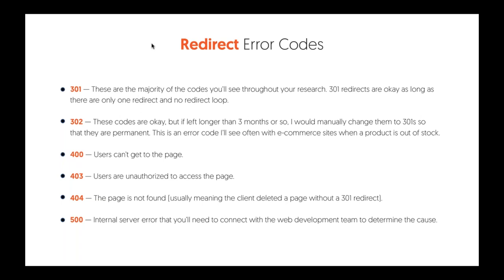A 404 is when users can't get to a page — the page is not found. This usually means people are linking to a page that doesn't exist or copied the wrong URL. So 301 redirect any of your 404 pages. A 400 error means people can't get to the page at all. A 403 means they're not authorized to access the page. And a 500 is an internal server error — something's wrong with your code.